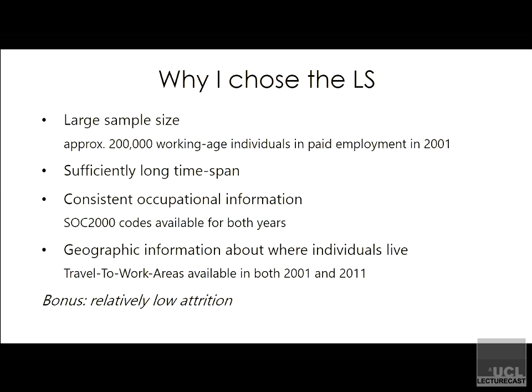The LS kind of meets all of the criteria I just set out. It has a large sample size. Because it's collected every ten years, even if you just use two waves, you already have ten years worth of observing people's lives, so quite a lot of people change occupations in that period, which is good. They conveniently have occupations in the same classification system, although it's imputed data for one of the waves I think. And it allows you to observe that mobility. It also has relatively small area-level geographic variables — I'm using travel to work areas in my case, which were available in both the 2001 and the 2011 dataset, which was great.